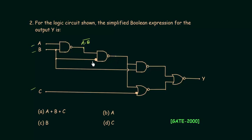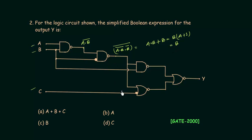For the second gate, there is a bubble on input B, meaning B is complemented. So the second gate output is ((A·B)' · B')'. Simplifying using De Morgan's law: this becomes A·B + B, and taking B as common gives B·(A + 1) = B. So the output of the second gate is B. The third gate has both inputs equal to B; in a NAND gate with identical inputs, the output is the complement of the input, so the output is B'.